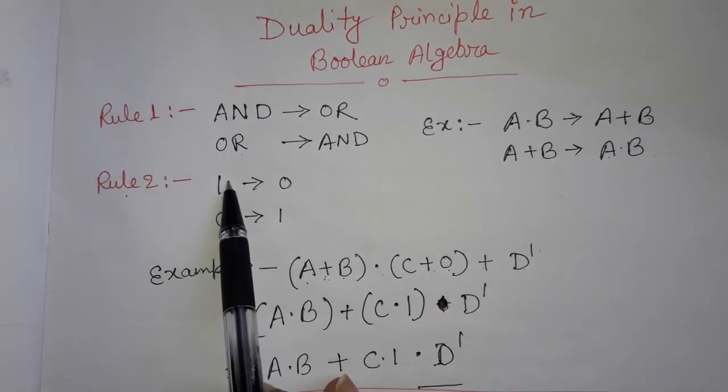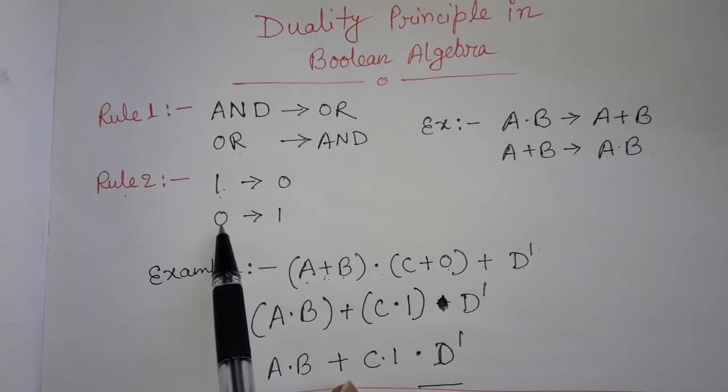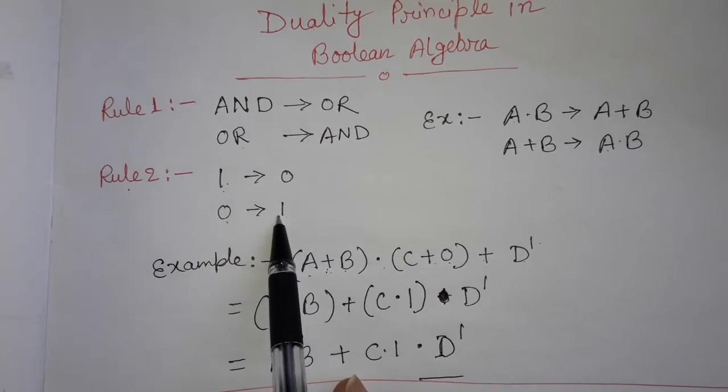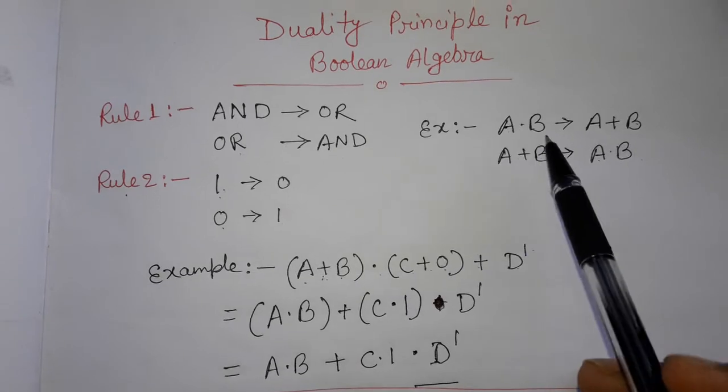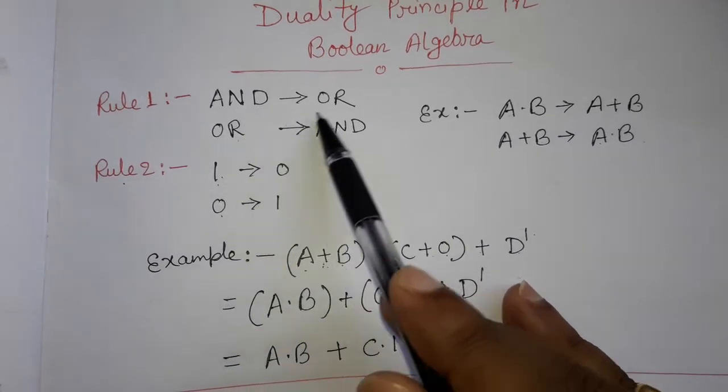If you are getting 1, you have to convert it into 0. If you are getting 0, you have to convert it into 1. That is rule two. For example, suppose for this rule one.